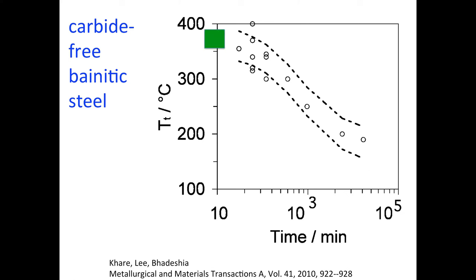If I wanted to design a steel which can transform in approximately 10 minutes, I would need a transformation temperature of the order of 400 degrees centigrade. On the other hand, I cannot achieve a fast transformation if the transformation temperature is of the order of 150 degrees centigrade.